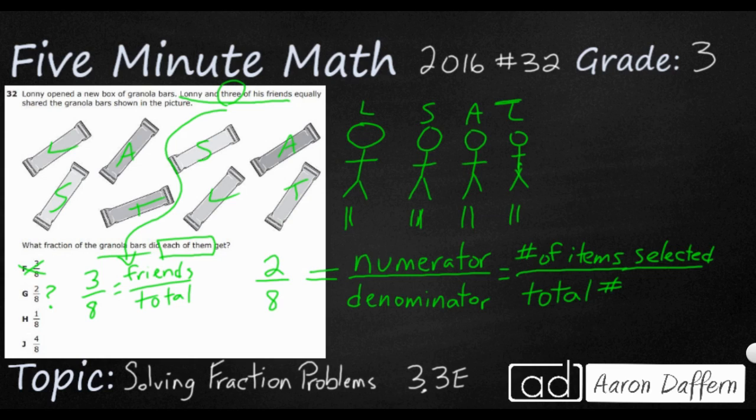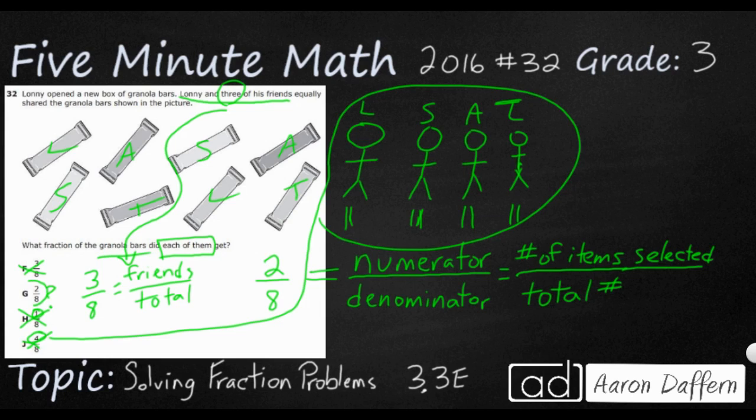H is one eighth. So we've got the total there. But it says that each of them only get one. No, each of them get two. So that's going to be wrong. And then J, I didn't know where this four comes from. This four comes from right here. How many total boys there are. But we don't need the number of boys. We need the number of granola bars. So our answer is going to be G two eighths.